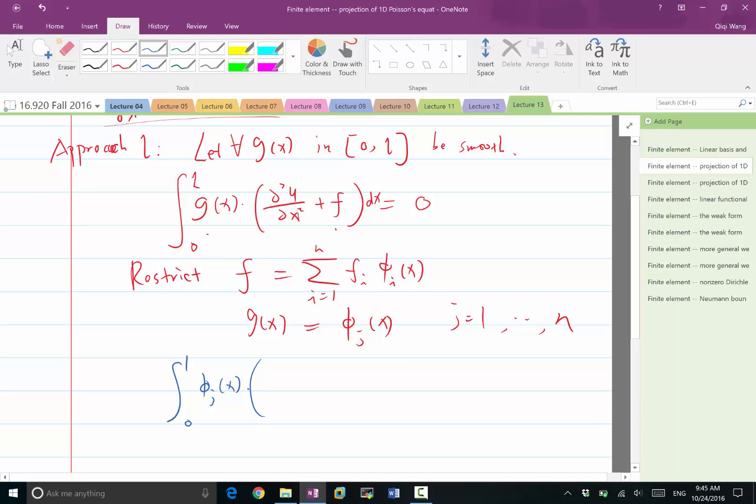I'm also going to replace, oh, I'm sorry, I messed up. I shouldn't be replacing f, I shouldn't be restricting f, I should be restricting the solution u. Previously, we restricted f because we wanted to approximate f. In this case, we wanted to approximate u, so we want to represent the solution u as a linear combination of these basis functions. So we represent u as this linear combination.